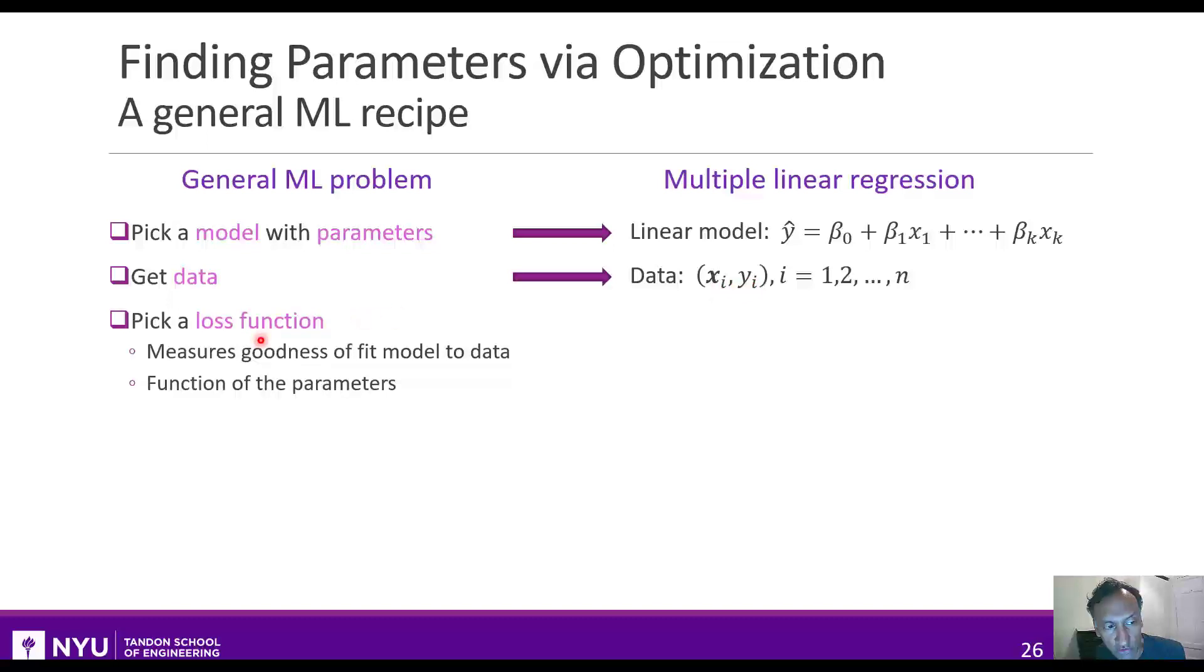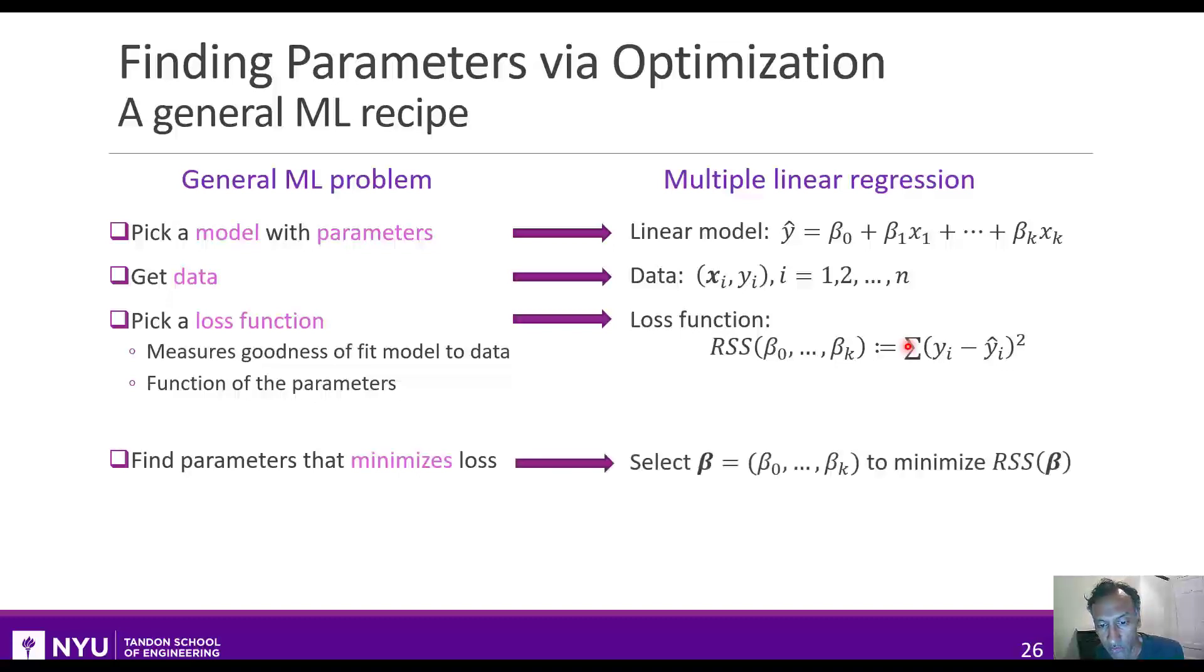And then you pick a loss function, which is some measure of how well this model fits the data. And this will be implicitly a function of these parameters. For the least square solution, that's just the residual sum of squares is our loss function. And finally, you find the parameters that minimize that loss. So in our case, we pick the betas to minimize this residual sum of squares. These four steps will occur for all the basic supervised machine learning problems that we'll have. We pick a model, we get data, we pick a loss function, and then we minimize it.